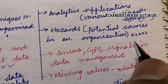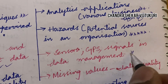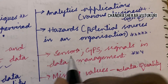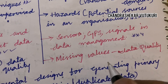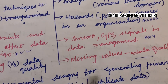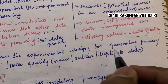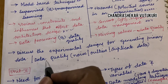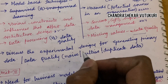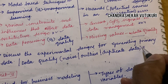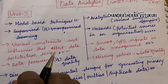Database management in sensors, GPS, and signals may be a long question, or sometimes they will ask two parameters for two or three marks. Missing values and data quality is also a very important question. Discuss the experimental designs for generating primary data — or data quality topics such as noise, outliers, and duplicate data — these are all very important short questions covered from Unit 1, i.e., questions 2A, 2B, 3A, and 3B.